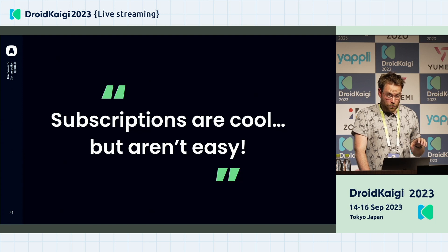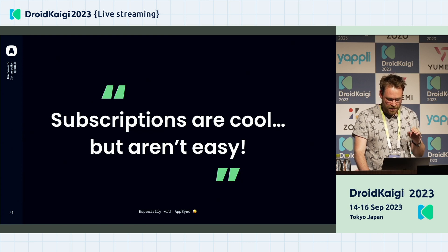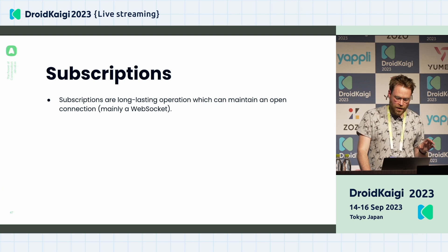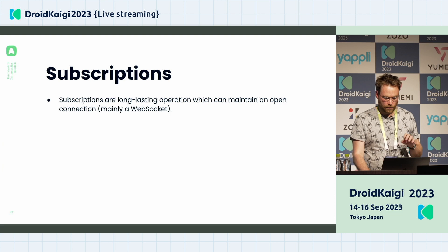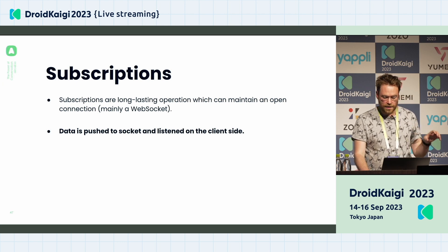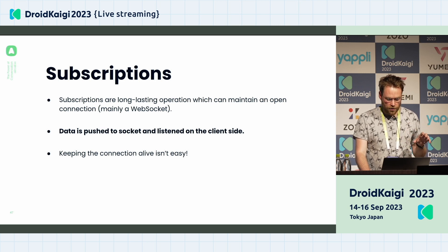Subscriptions are very cool — real-time communication is awesome. But subscriptions aren't really easy, especially when we have an AppSync backend. Subscriptions are long-lasting operations that maintain an open WebSocket connection between your client application and the backend. Data is pushed to the socket and listened on the client side, keeping the connection alive. But obviously things can get more complicated with AppSync.